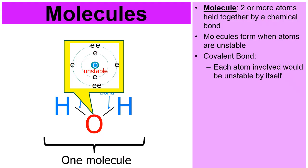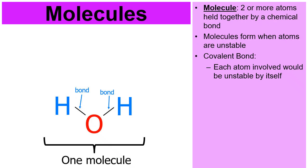They're all unstable by themselves, but they're going to combine their electrons and share them. They're going to share their electrons with each other, and thus they all will become stable.